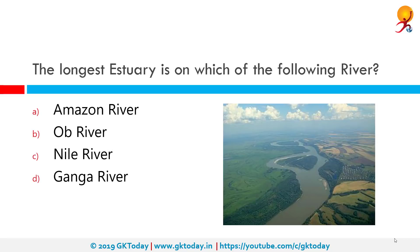The longest estuary is on which of the following rivers? The correct answer is the Ob River. The Gulf of Ob forms at the confluence of the Biya and Katun rivers, which have their origins in the Altai Mountains. It is the westernmost of the three great Siberian rivers that flow into the Arctic Ocean, the other two being the Yenisei River and the Lena River. The Gulf of Ob is the world's longest estuary.